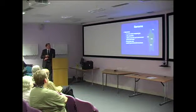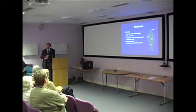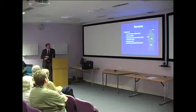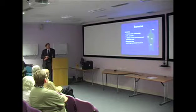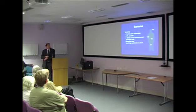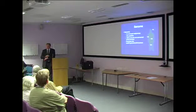Sarcomas are a bit more common in the paediatric age group, but they're still very rare tumours. The breast, the colon, and the lungs are still by far the common cancers. In terms of where they occur in the body, a lot of them occur in the lower limb and in the upper limb, and a minority occur in the trunk and in the head and neck, but 60% occur in the limbs — which is why orthopaedic surgeons tend to take a lead in treatment of these conditions.